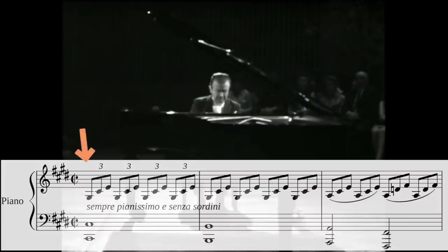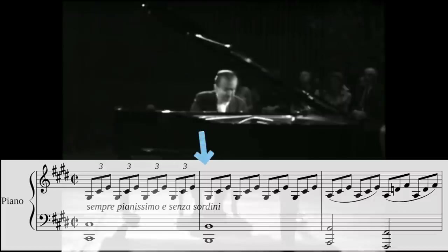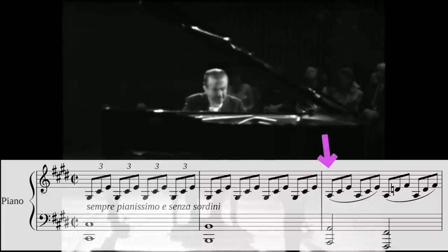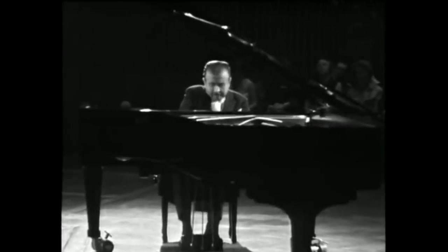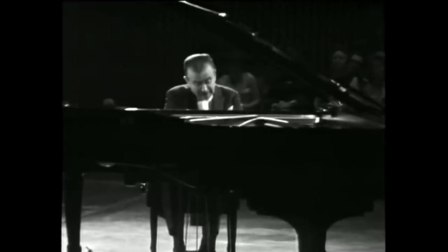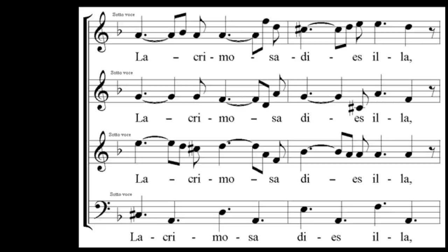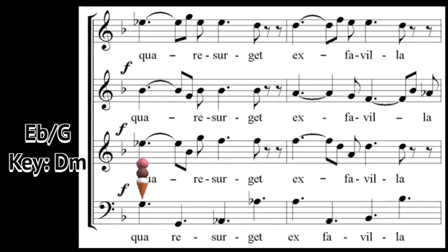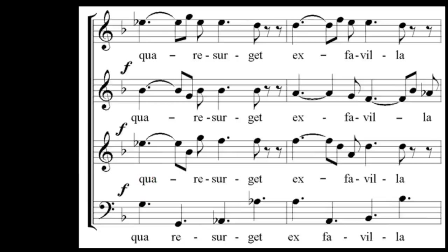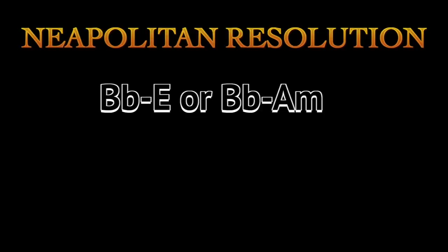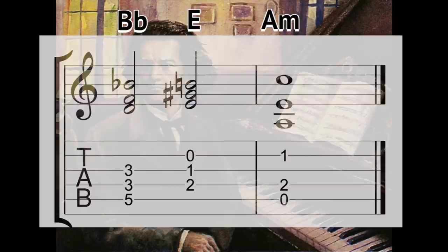Beethoven's Moonlight Sonata has a killer example of the Neapolitan chord in the beginning of the piece. Here's another Neapolitan chord in Mozart's Lacrimosa. Resolve the Neapolitan by going to the V or I chord — I usually go to the V because it sounds more evil.